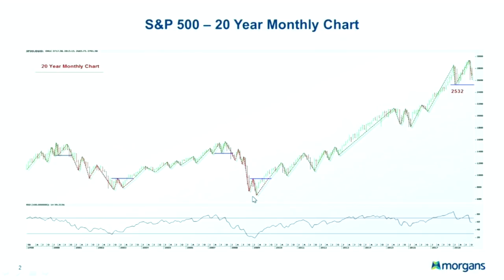Since the beginning of the bull market in March 2009, the sequence of higher highs and higher lows is still holding. So as long as key support of 2,532 points holds, the bull market is still in place. Given that the price setup is still holding, why is all the pessimism and cautiousness around the market?